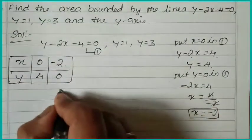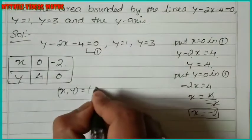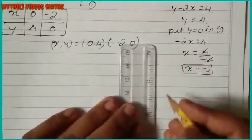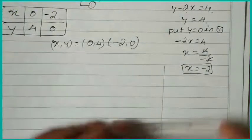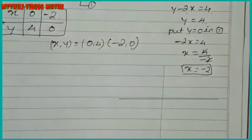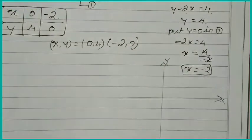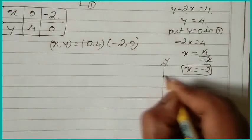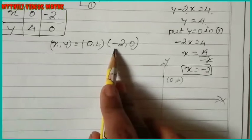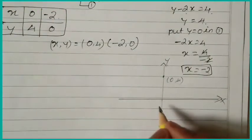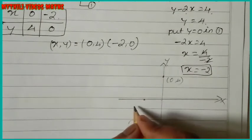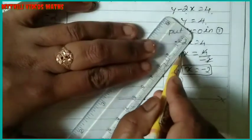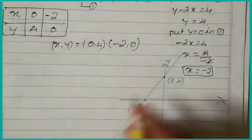Now we draw the graph. This is your y-axis and this is your x-axis. We plot the point (0, 4) on the y-axis and the point (-2, 0) on the negative x-axis, to the left side. Then we join these two points to draw the line.